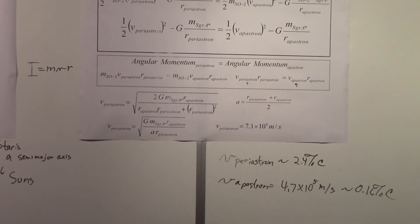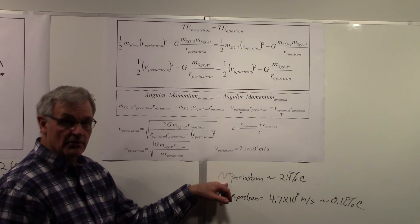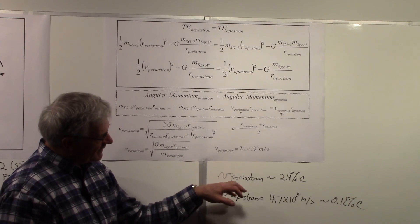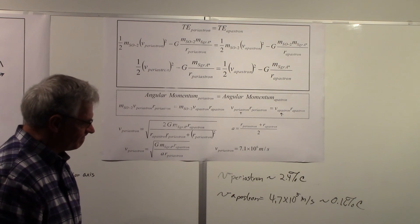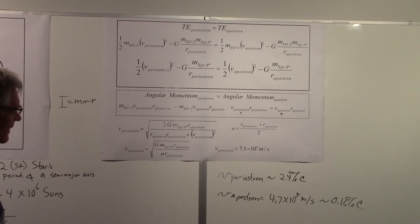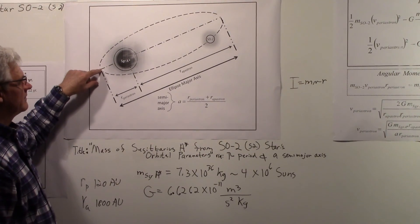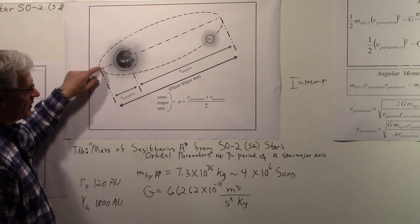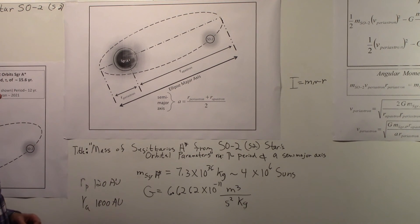So there are the two velocities. It's really remarkable that when the star SO2 is at its closest point to the supermassive black hole, it's moving at a few percent of the speed of light. At the closest point, the velocity of SO2 is about 2.4% the speed of light, and at its far point it's roughly 0.16% the speed of light. That's how we estimated those velocities.